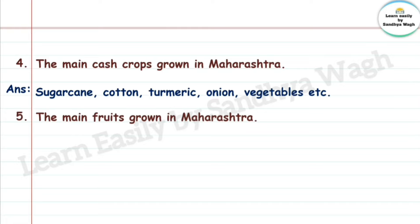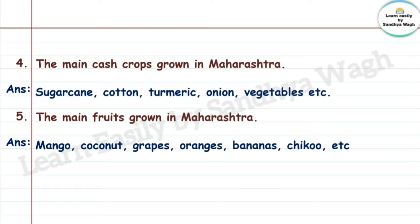Question 5: The main fruits grown in Maharashtra. Answer: Mango, Coconut, Grapes, Oranges, Bananas, Chikku, etc.